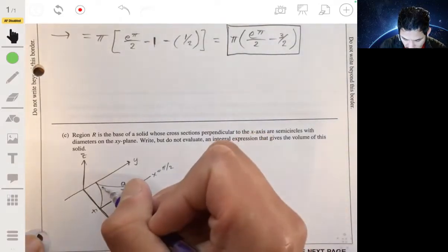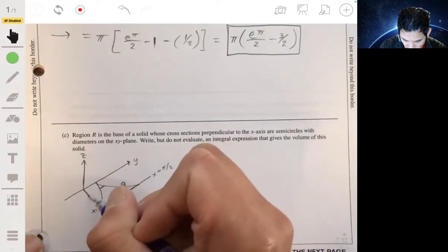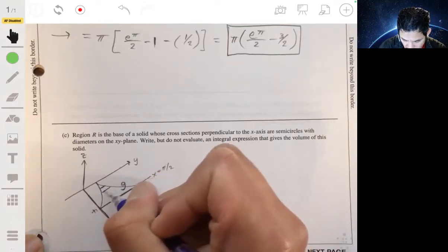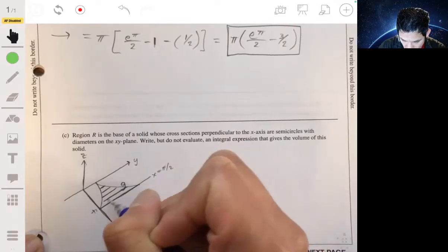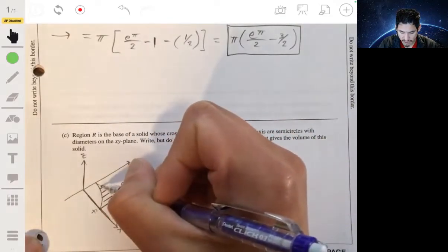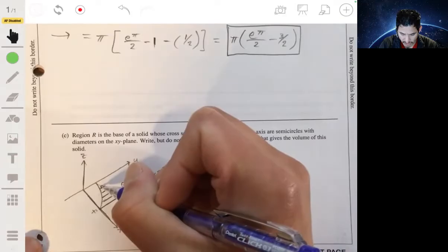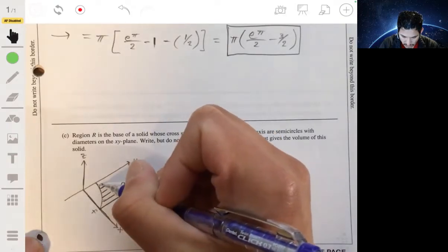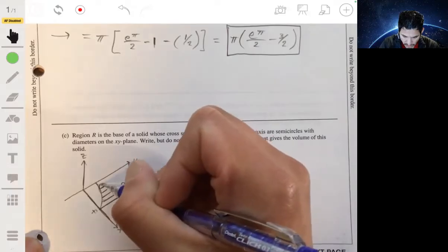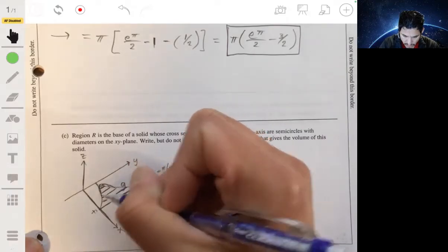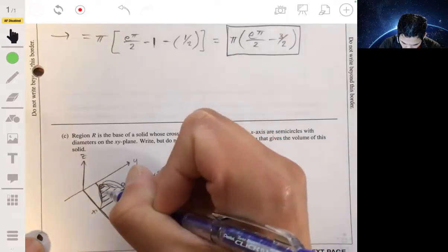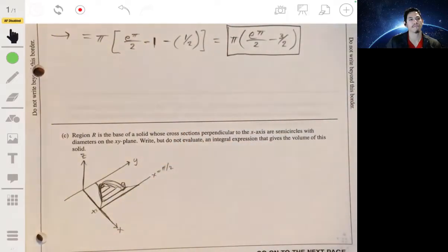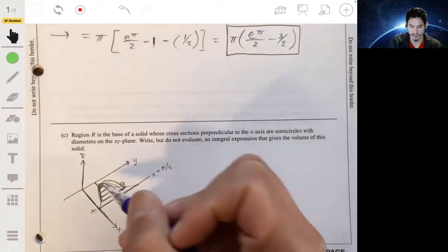Now semicircles, so the cross sections are going to look like this. Again, they're going to be perpendicular to this axis, or parallel to the y-axis. So they're semicircles, so they're going to be coming out like this sort of thing. This is going to be like some dome looking thing.